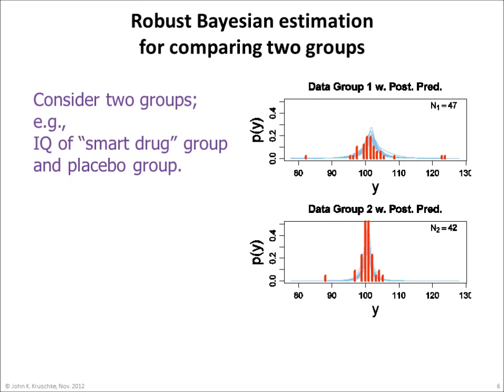As a complete realistic example, I'd like to show you robust Bayesian estimation for comparing two groups. Consider two groups from which we obtain metric data. For example, suppose we measure the IQ scores of some people given a smart drug and from some other people given a placebo. The data are shown by the red histograms. Notice that there are outliers in the data, but as far as we know, these outliers are representative of the groups and therefore should not be omitted.